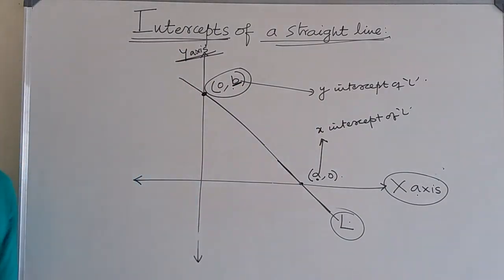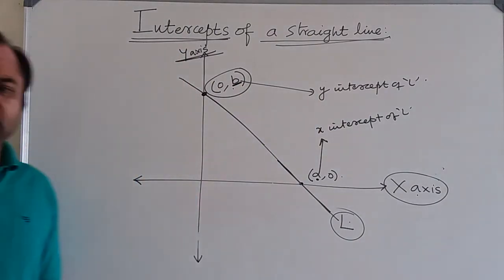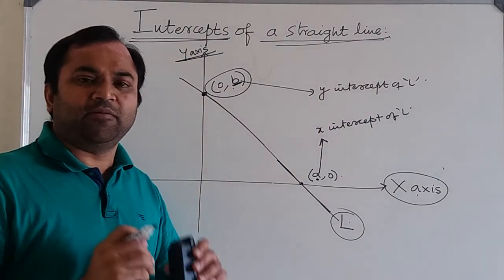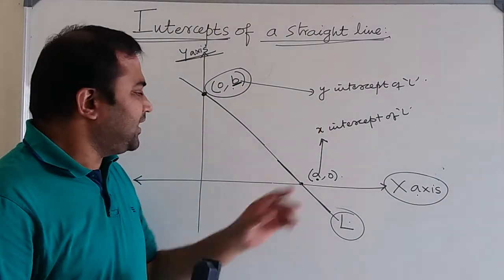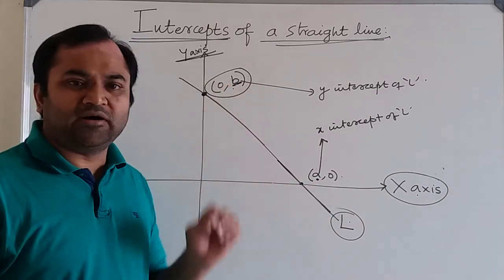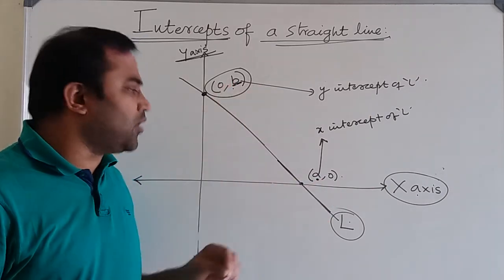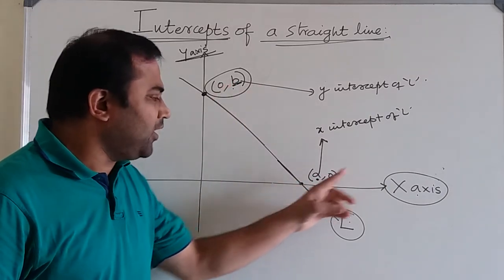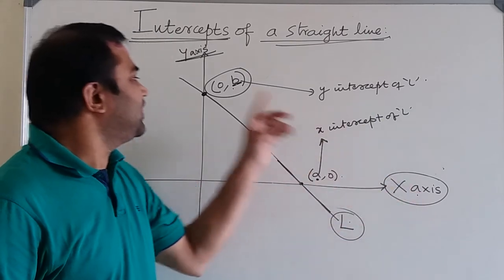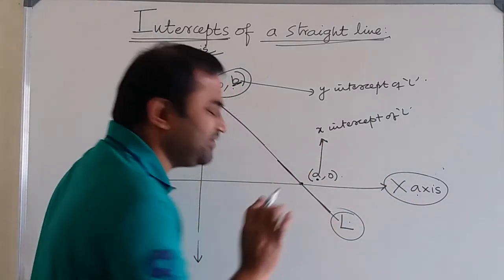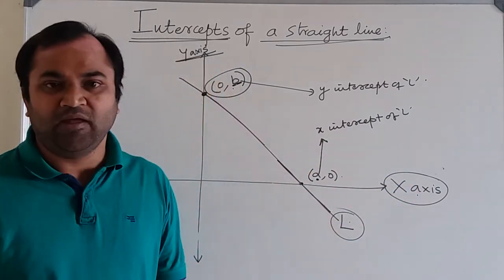So b, the y-coordinate b, is said to be the y-intercept of the straight line L. So x-intercept and y-intercept mean the x-coordinate and y-coordinate in the respective points on the respective axes through which the line is passing.